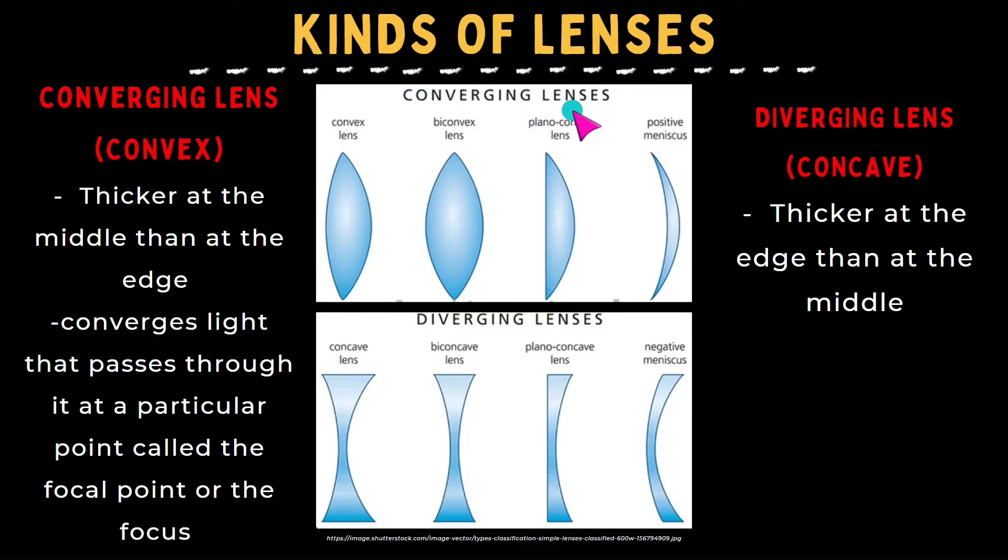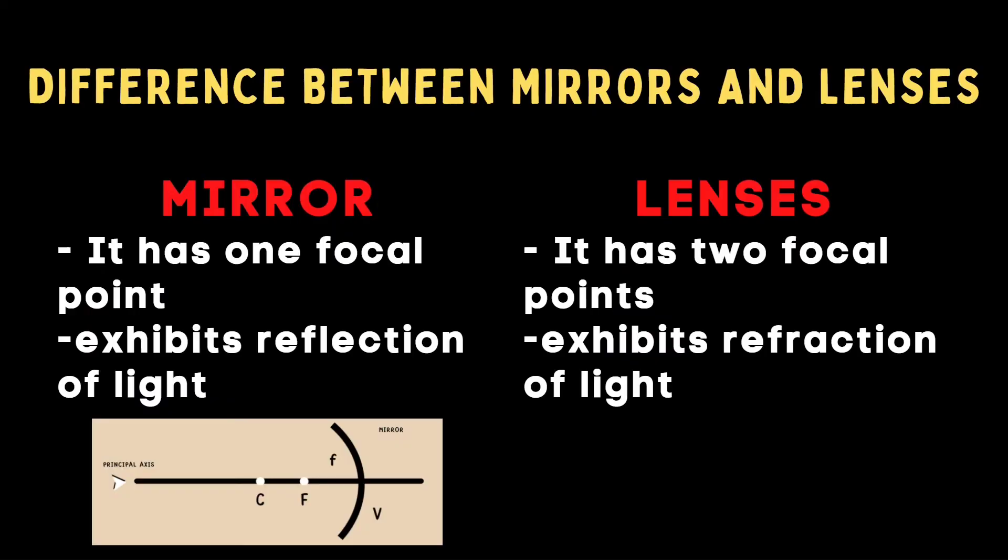Convex lens and concave lens have different shapes. For example, under converging lens, we have biconvex, plano-convex lens, and positive meniscus. Under diverging lenses, we have biconcave lens, plano-concave lens, and negative meniscus.